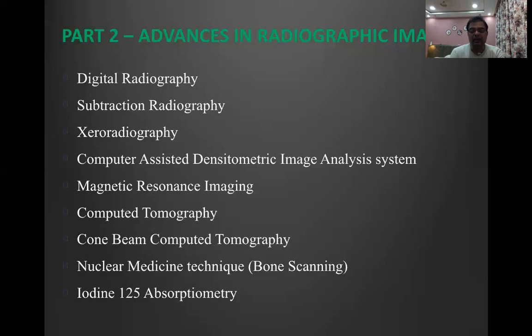Any radiographic technique we follow will only tell us past disease activity. Radiographs only tell us what happened up to the moment that particular radiograph was taken — they do not tell us what is happening right now or what is going to happen tomorrow. The last two techniques — bone scanning and iodine-125 absorptiometry — are the two that can help us predict what is going to happen. Everything else only tells us what happened up until the procedure was done.